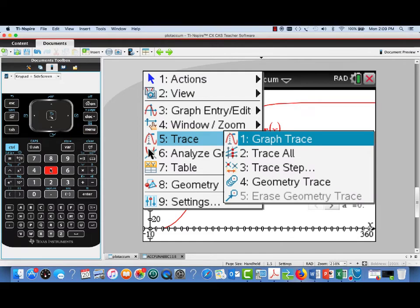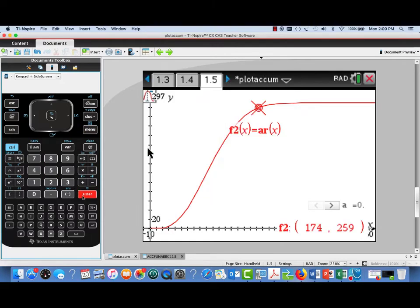If I turn on the trace, I can now see a readout of the cumulative number of people who've entered the line for any time X. Our answer will be for X equals 300. So let's jump out to that value and see our answer of 270.